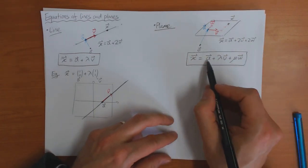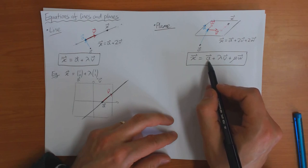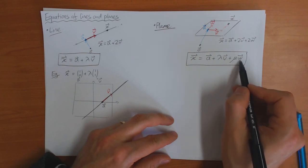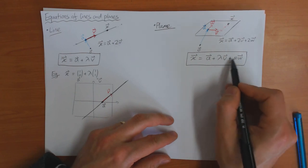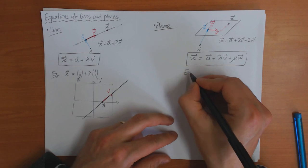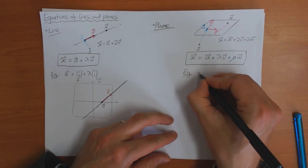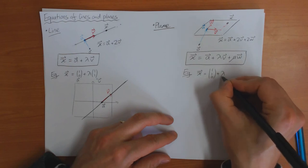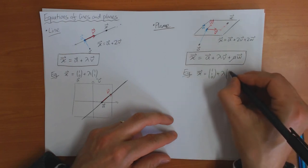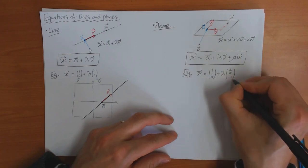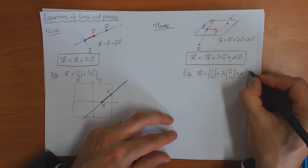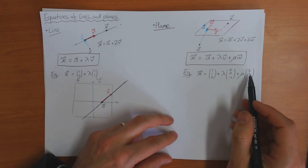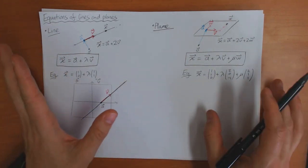To recap: a is a point on the plane that you know, lambda and mu are any numbers, and v and w are two vectors on the plane which you know. An example would be x equals (1, 1, 0) plus lambda times (2, 0, -1) plus mu times (2, 1, 1). So that defines a plane in three dimensions.